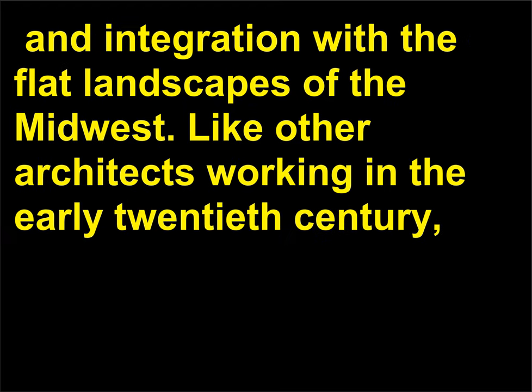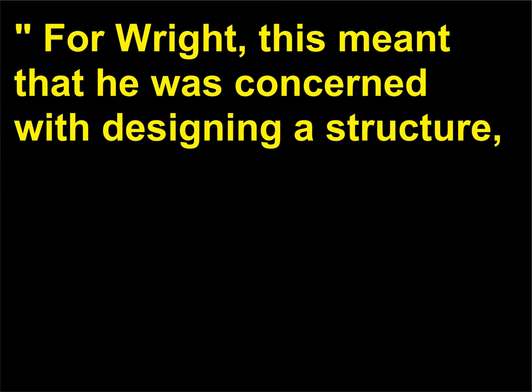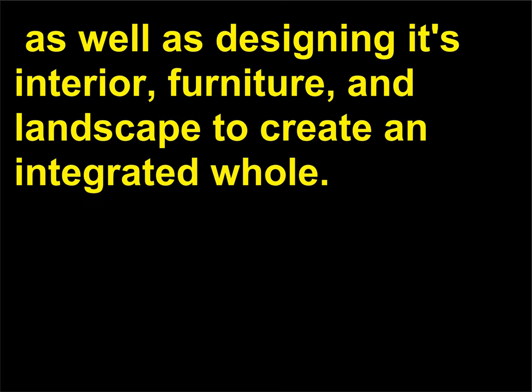Like other architects working in the early 20th century, Wright was interested in developing a unified architecture. But he also believed in what he called organic architecture — for Wright, this meant he was concerned with designing a structure as well as its interior, furniture, and landscape to create an integrated whole.